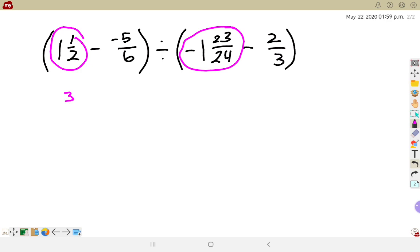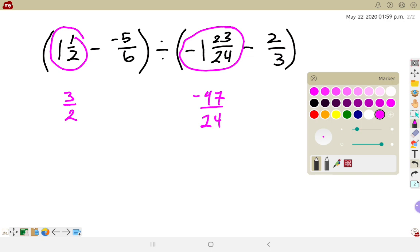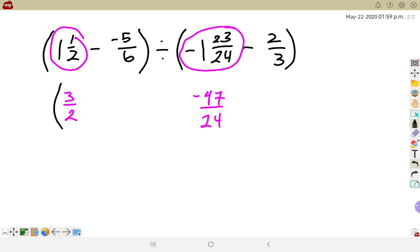I don't want any mixed numbers. So 1 and 1 half, I'm going to rewrite it as 3 halves, and negative 1 and 23 over 24, I'm going to write as negative 47 over 24. And everything else is going to stay the same in the same spot where it was before.